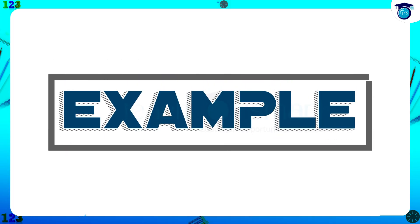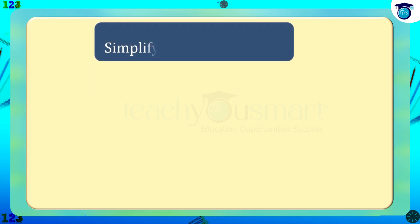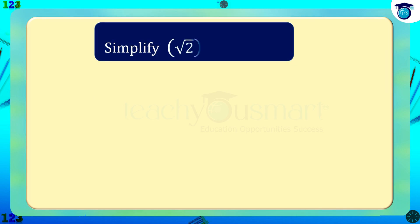Let us see some examples. First, simplify: a raised to p multiplied by a raised to p multiplied by a raised to p plus q. Simplify: root 2 whole raised to 1 by 3 multiplied by root 2 whole raised to 2 by 3.